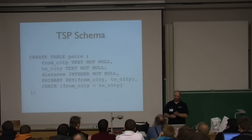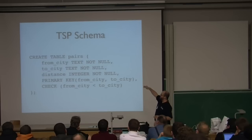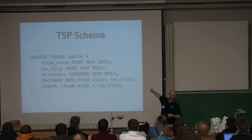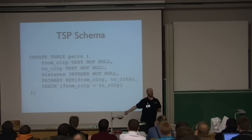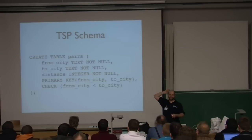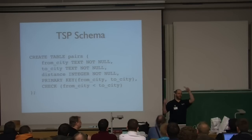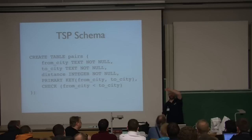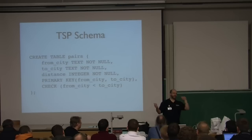We'll have a very simplified schema with a table called pairs: from_city, to_city, and distance. We declare that from_city and to_city together define uniqueness, and then we add a CHECK constraint that from_city < to_city. Why? We're assuming the distance between, say, Bari and Bologna is the same as Bologna to Bari, so we only store one direction, limiting representation to one of each pair.